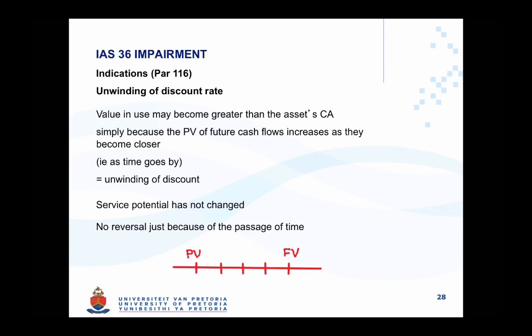A consequence of this is that if you move from your present value one time period forward, the amount will increase. Move another time period forward and the amount will increase again. What causes this increase is the interest for the time period that has elapsed. Your present value at future points in time will therefore increase in value each time interest is added, until ultimately returning to your future value.